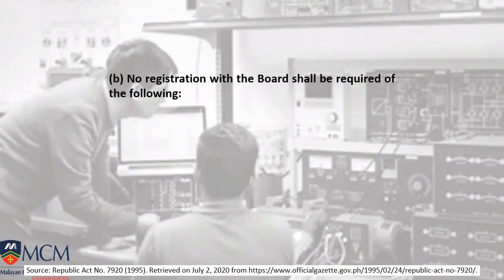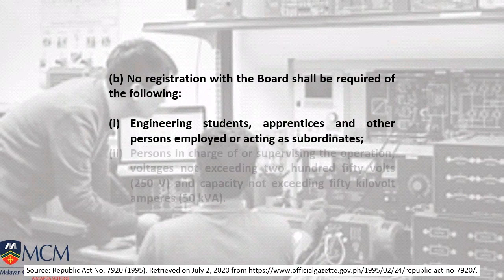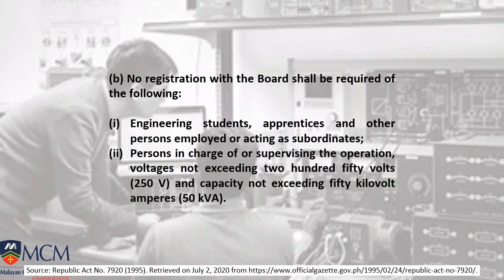Section 13 also states that no registration with the board shall be required of the following: engineering students, apprentices, or other persons employed or acting as subordinates supervising operations with voltages not exceeding 250 volts and capacity not exceeding 50 kilowatt-amperes. No registration is required for this area.